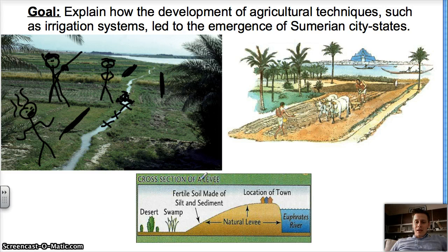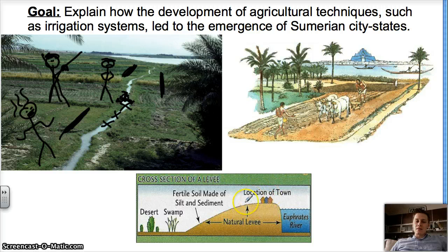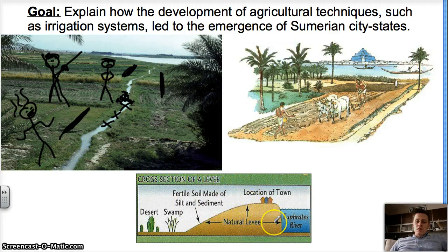When we come to levees, these take a lot of work because you've got to build up all this dirt and build a wall. Here we have the Euphrates — they build a town up on top of it, that's the city-state, and then this is the levee. You're going to have the fertile soil from the river, the sediment, the silt. The levee is a wall that protects them from the floods of the river, and that takes a lot of work. Anything that takes a lot of work requires cooperation and teamwork.